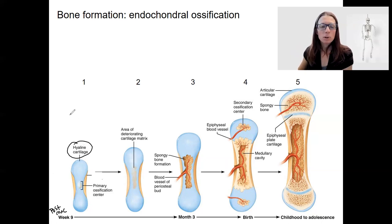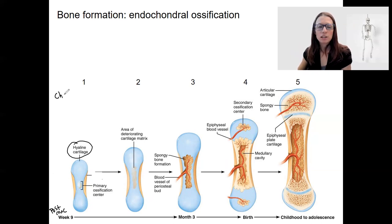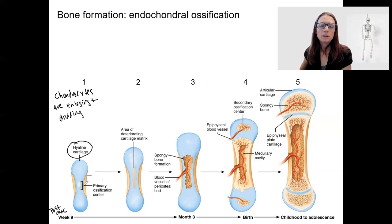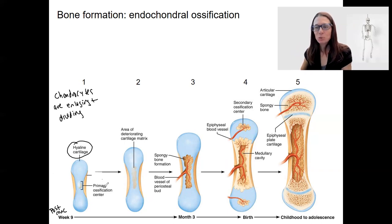At this time point, the bones are growing. What's happening is the chondrocytes that make up the hyaline cartilage are enlarging and dividing. In the middle, this is going to become a primary ossification center — the first and primary place where ossification is going to occur.